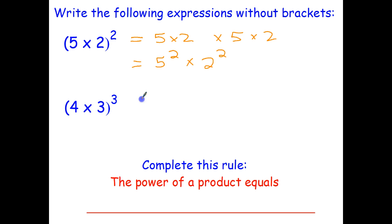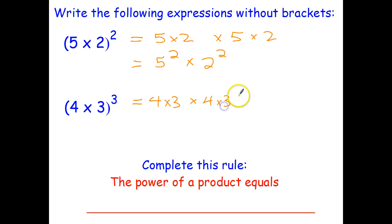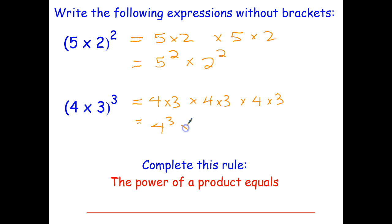Similarly, four times three in brackets to the power of three means four times three times four times three times four times three. Four times four times four can be written as four to the power of three. Three times three times three can be written as three to the power of three. And that's how we can write that expression without brackets.